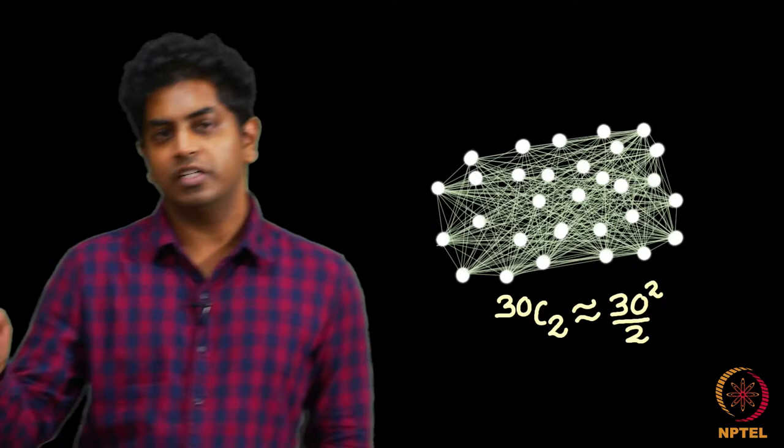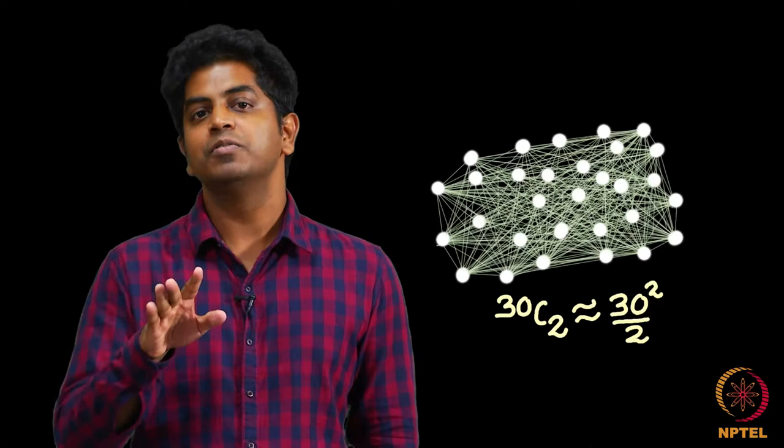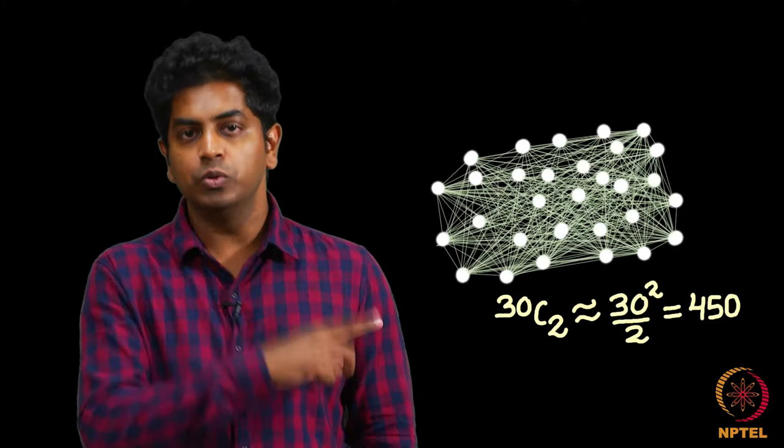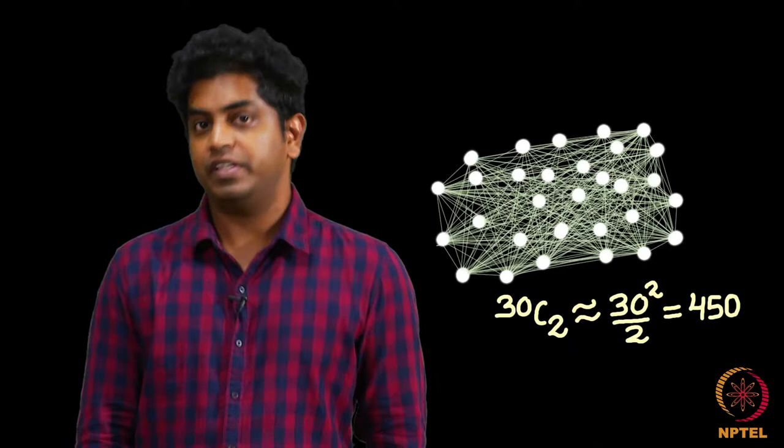How many possible friendships are there here? We have discussed this before. It is roughly 30 square by 2. To be precise, it is 30 into 29 by 2, but throughout the discussion in this course, a graph on n number of vertices we assume has roughly n square by 2 number of edges. So with 30 people, you have 30 square by 2 number of friendships, which is 450.